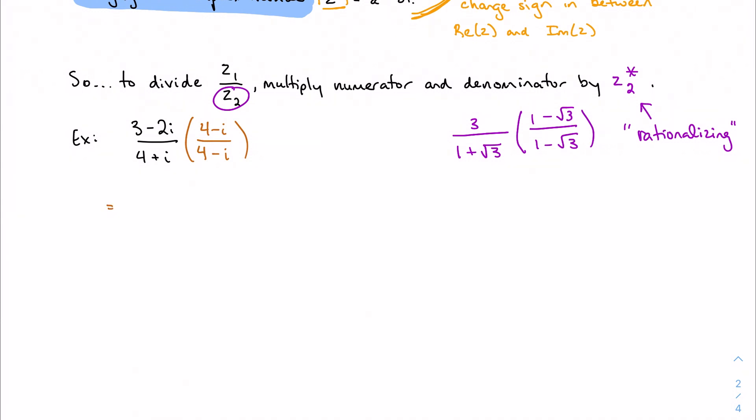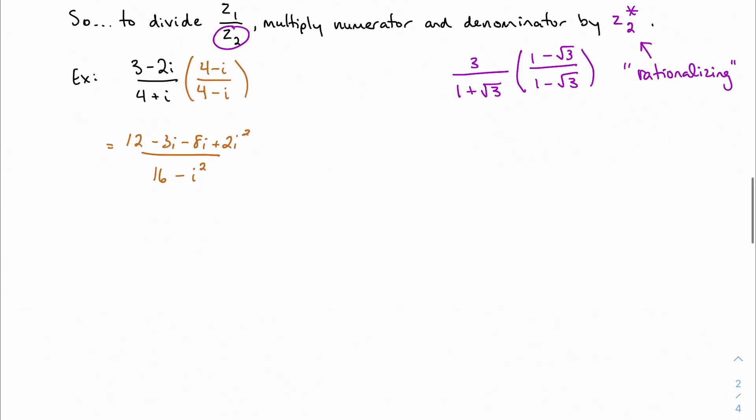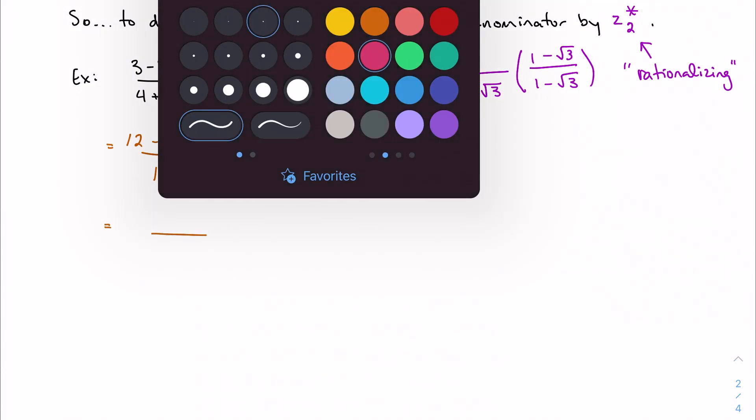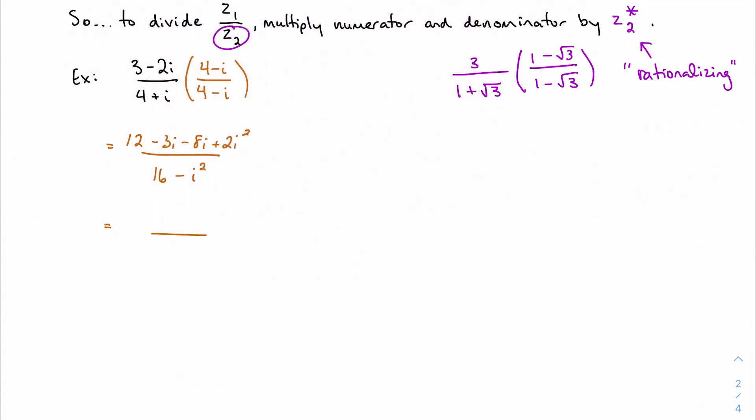What this is going to do—this will always create a difference of squares on the bottom. If you don't remember this trick it's okay to FOIL it out, but save yourself some time. I'm going to get 16 minus i squared; we'll simplify that in a minute. Difference of squares: square the first, square the last, subtract. And we'll FOIL on the top: minus 2i squared. Let's simplify. Minus i squared turns into a plus 1, so my denominator is 17.